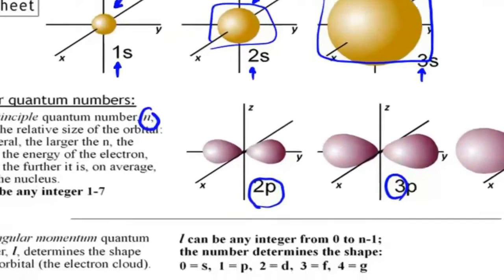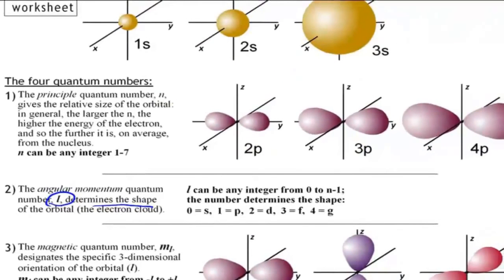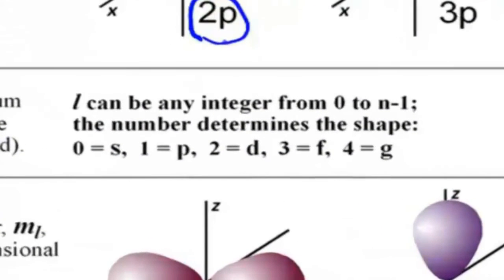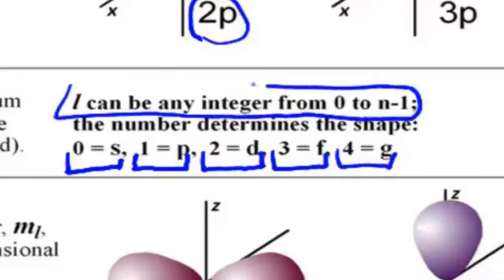Now let's look at l, the angular momentum quantum number. This determines the shape of the orbital, and as you can see, the s shape is quite different from the p shape. Each letter has a corresponding number: l equals 0 represents the s orbital, l equals 1 is p, l equals 2 is d, 3 is f, and l equals 4 gives g orbitals. Note that l can be any integer from 0 to n minus 1.